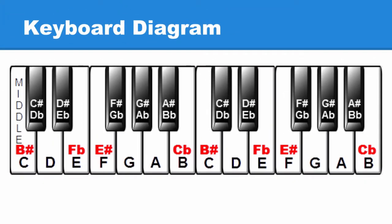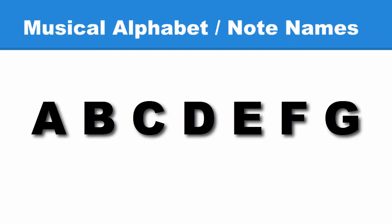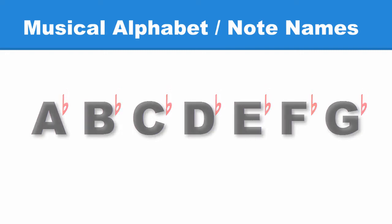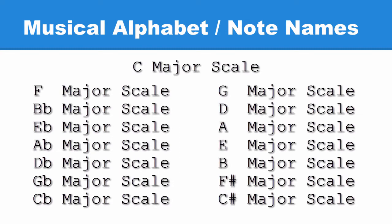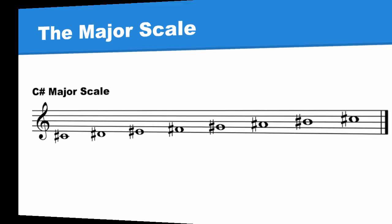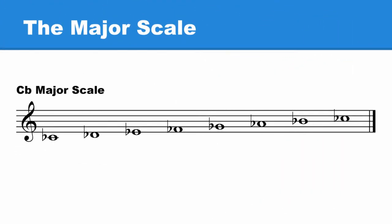With the addition of these note names, we now have every note name in the musical alphabet, every note name in the musical alphabet with a sharp, and every note name in the musical alphabet with a flat. This provides us every note name needed to write every major scale there is. The best way to illustrate these white key enharmonic spellings is to look at the C sharp major scale and the C flat major scale.